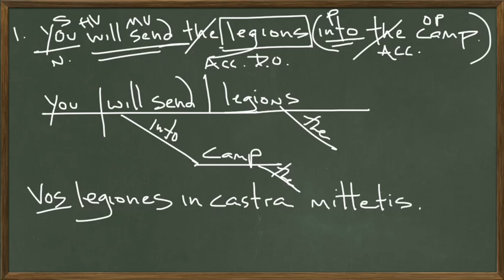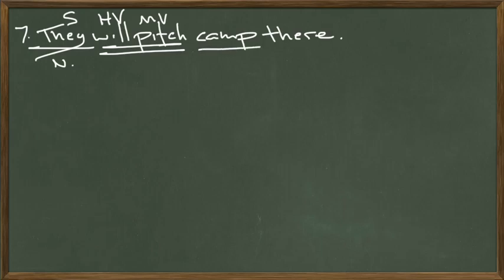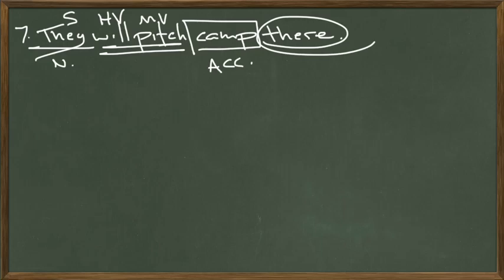That's sentence one. Let's look at another problem sentence, number seven — again, this has to do with future tense verbs, it's what's causing the trouble. 'They' is the subject, nominative case. 'They will pitch' — pitch is the main verb, will is a helping verb. They will pitch what? They will pitch camp, direct object, accusative case. Where are they going to pitch it? They're going to pitch it there. That last word answers the question where — that's an adverbial question, and I always circle adverbs.